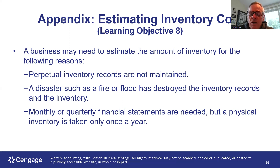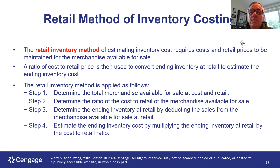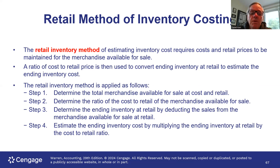There are circumstances where we have to estimate the value of the inventory, and we'll go through two methods. The first method is called the retail method of costing inventory. We estimate the inventory cost based on the relationship between the retail price and the cost of the merchandise. We come up with a ratio that enables us to convert the carrying value of the inventory from retail to cost. We determine the total merchandise available for sale at both cost and retail — that would be beginning inventory plus purchases — then look at the ratio between cost and retail. Then we determine ending inventory at retail by deducting sales from merchandise available for sale, and estimate the ending inventory cost by multiplying the ending inventory at retail by that cost ratio.